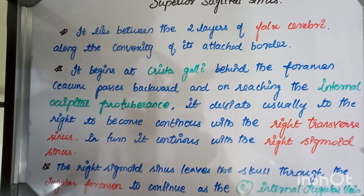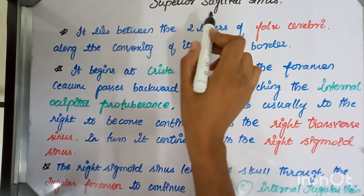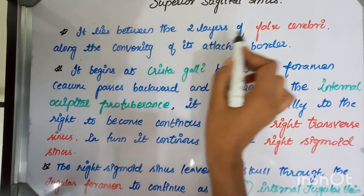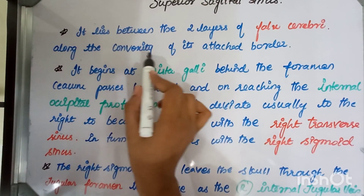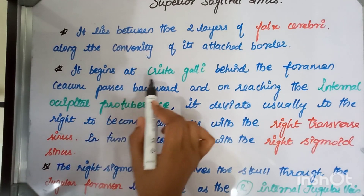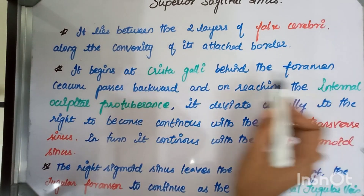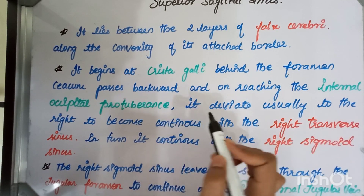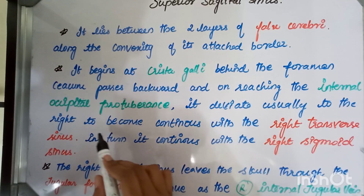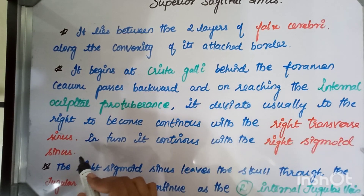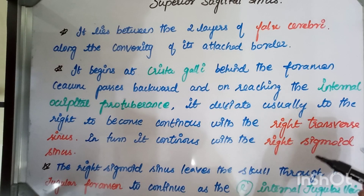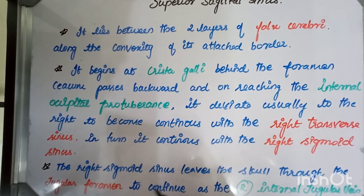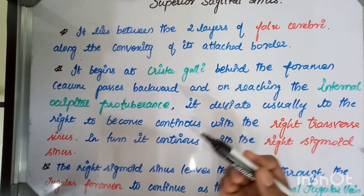In a crisp manner, three key points: the superior sagittal sinus lies between the two layers of the falx cerebri along the convexity of its attached border. It begins at the crista galli behind the foramen cecum, passes backwards, and on reaching the internal occipital protuberance it deviates usually to the right to become continuous with the right transverse sinus. In turn it continues with the right sigmoid sinus, which leaves the skull through the jugular foramen.